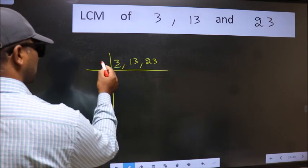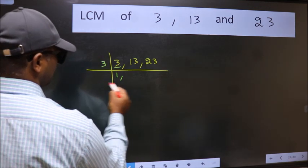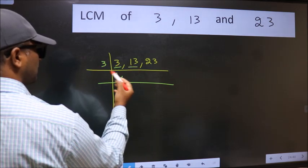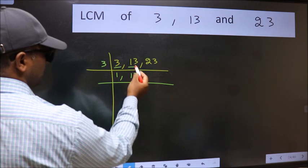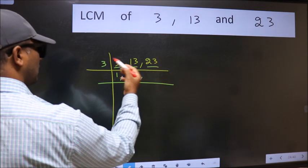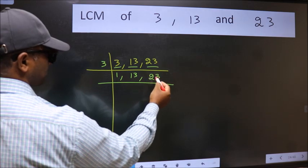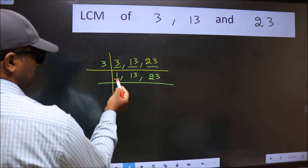3 is a prime number so 3 divides 3. The other number 13 not divisible by 3 so we write it down as it is. The other number 23 not divisible by 3 so we write it down as it is. Now we got 1 here.